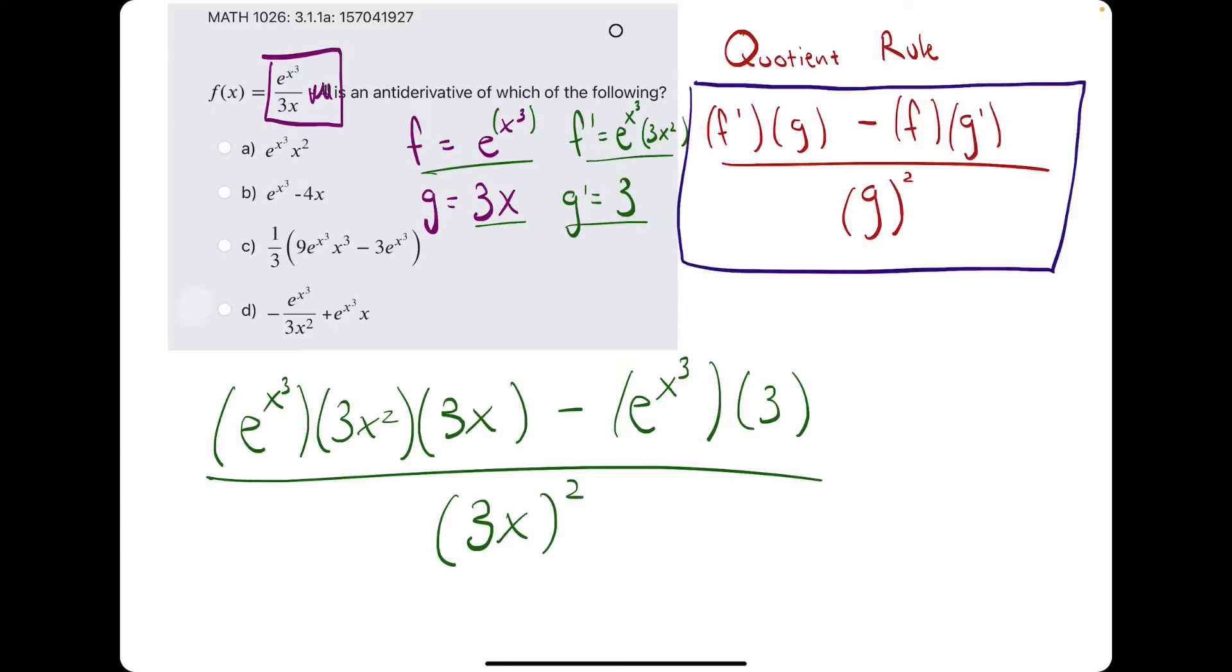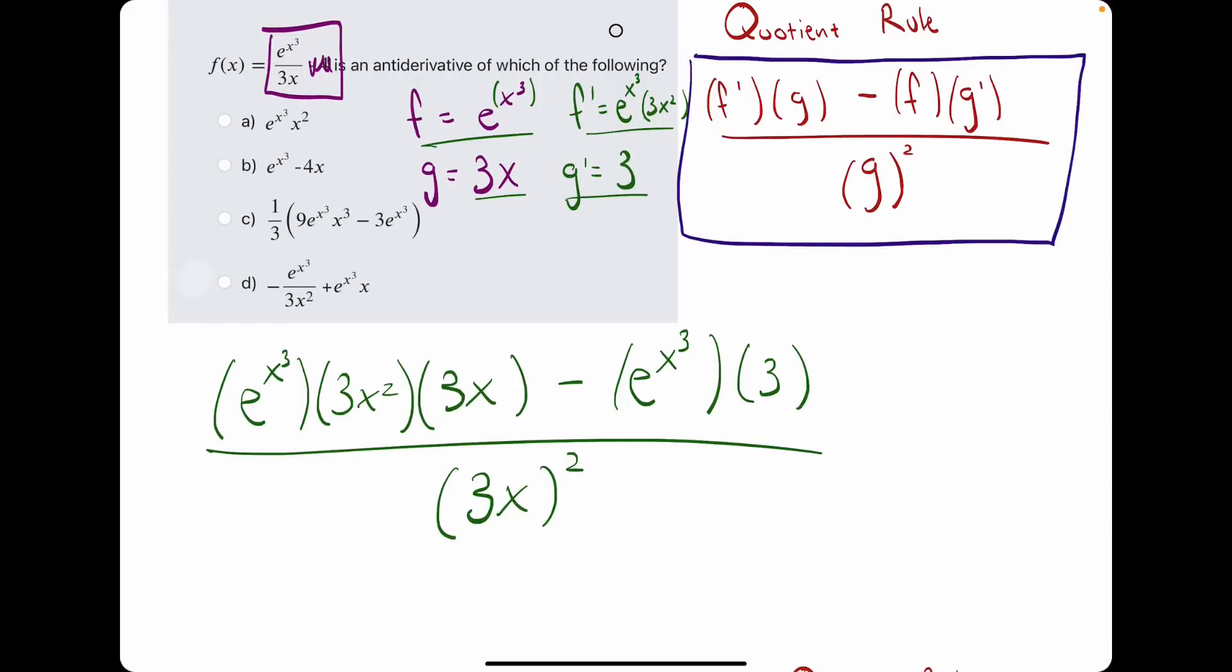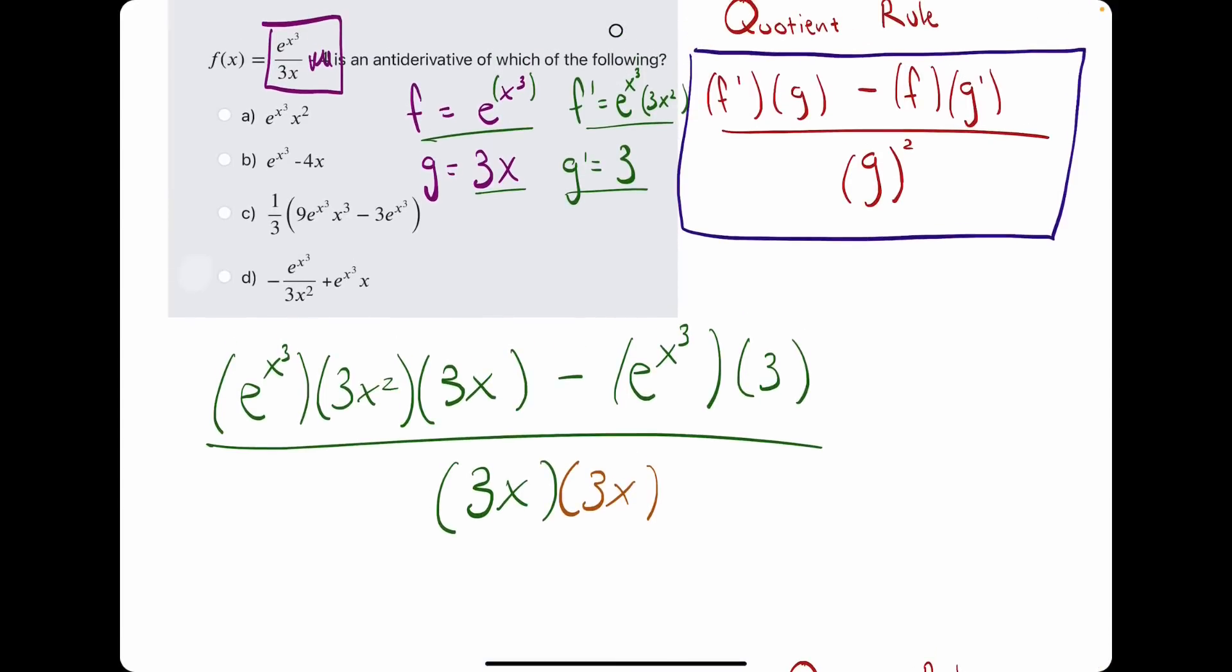All right. It looks like they might have simplified this quite a bit. So, let's see what we might be able to simplify. Starting with the denominator, with 3x squared, we can actually treat that as 3x times 3x.